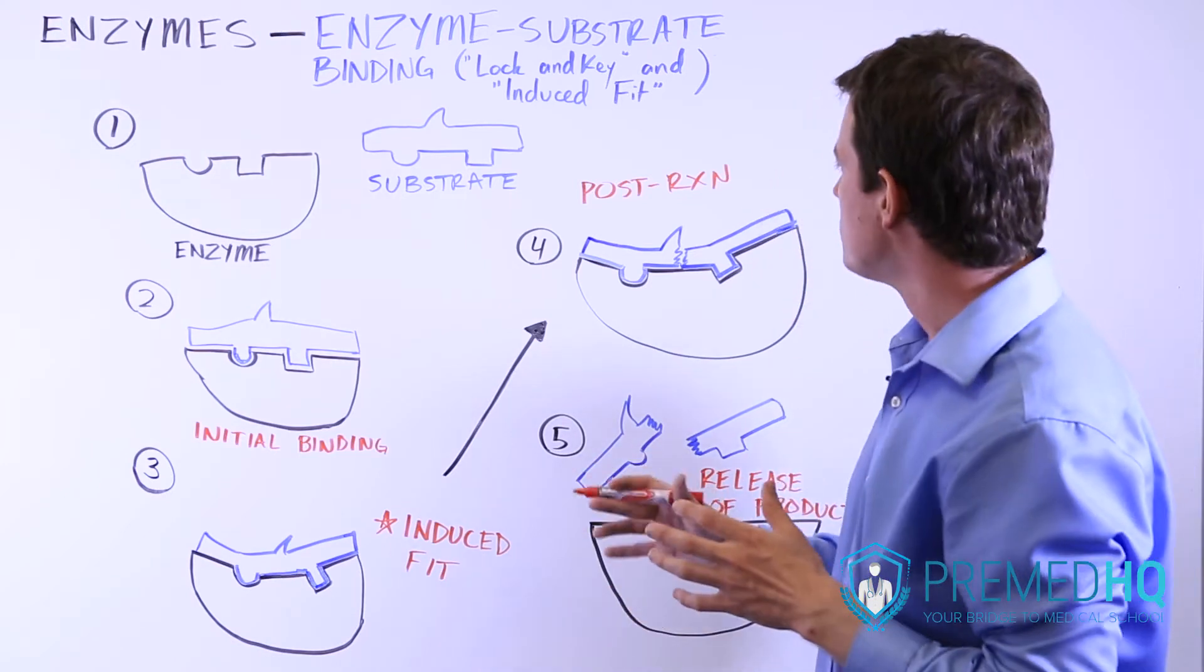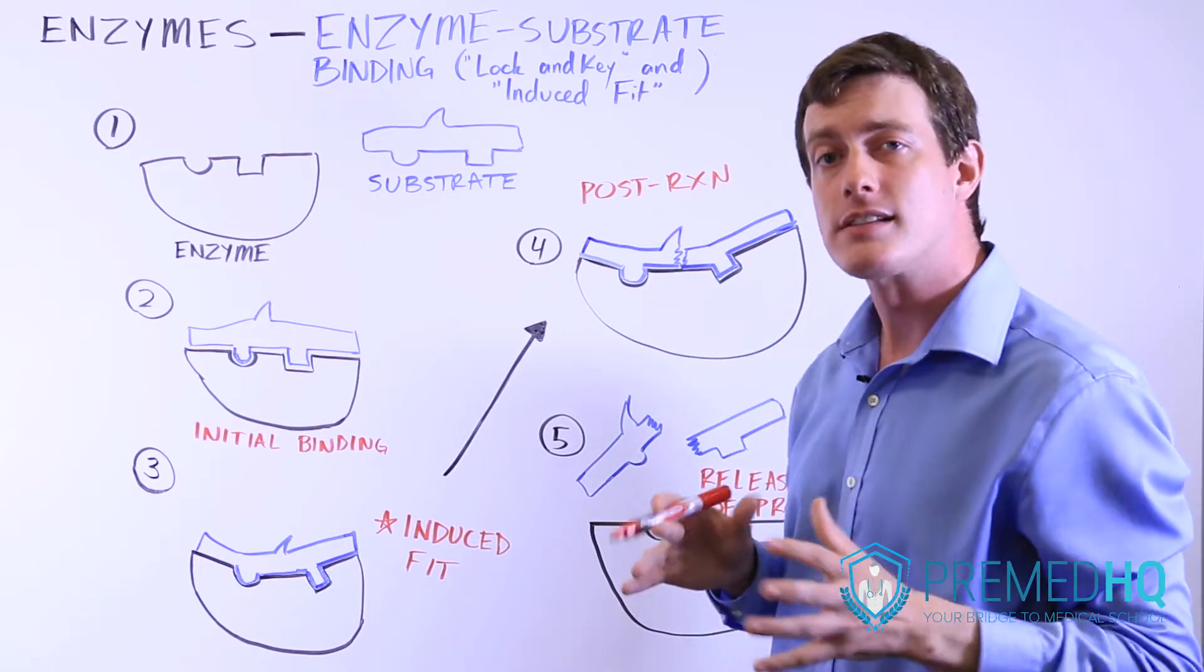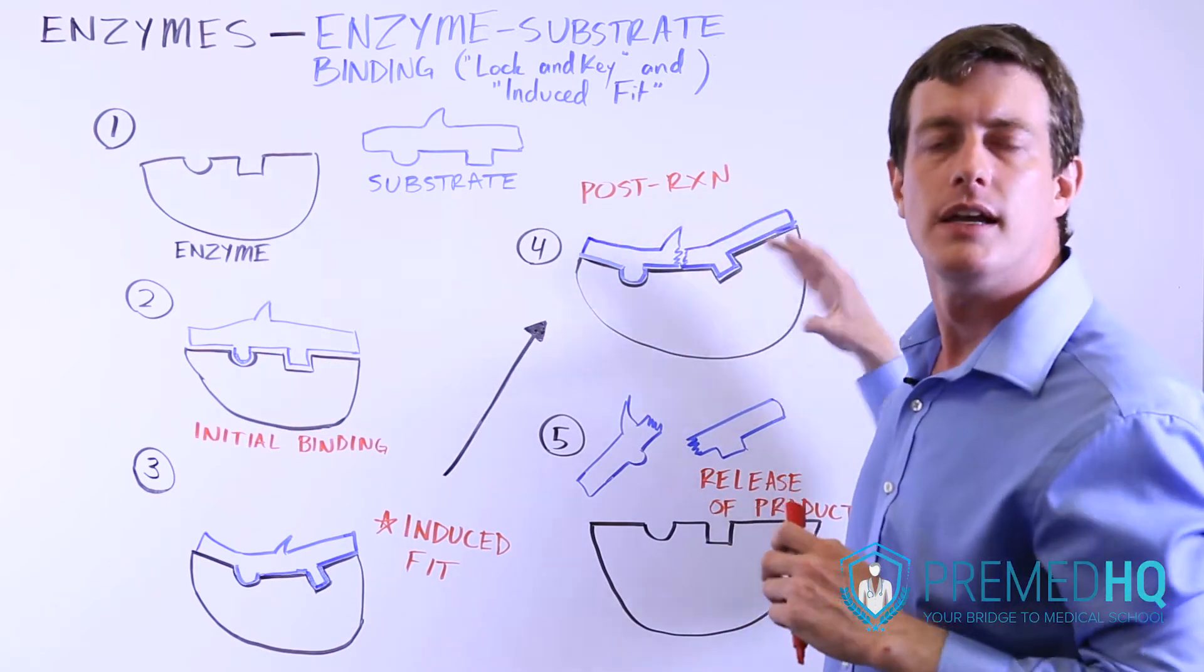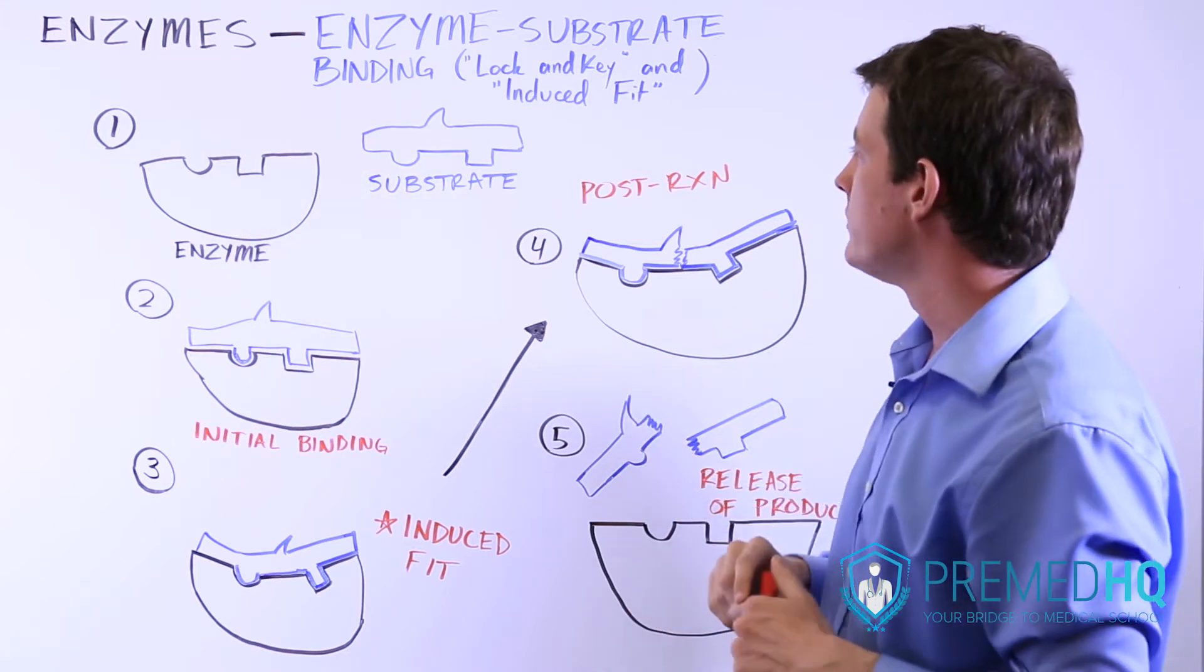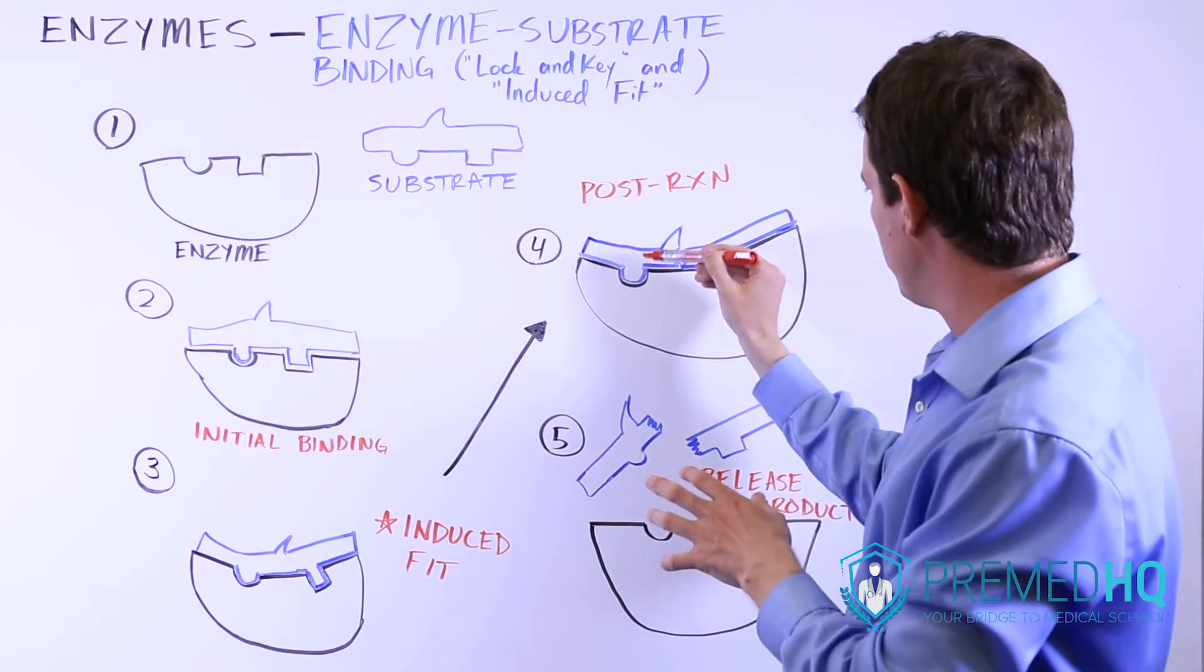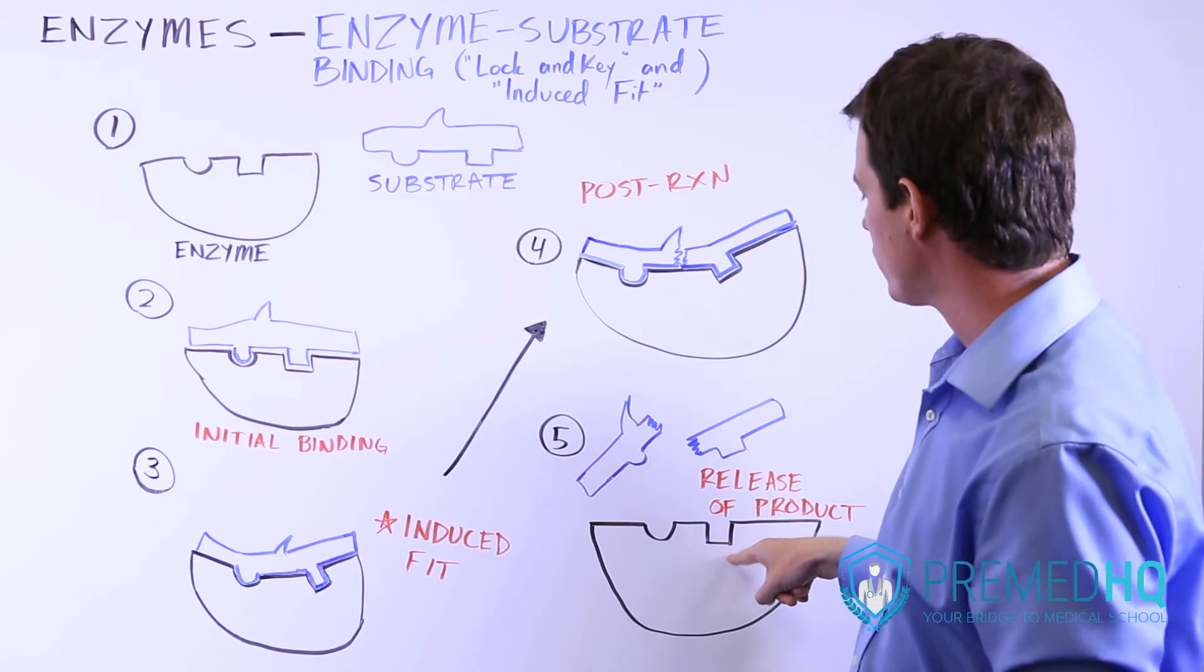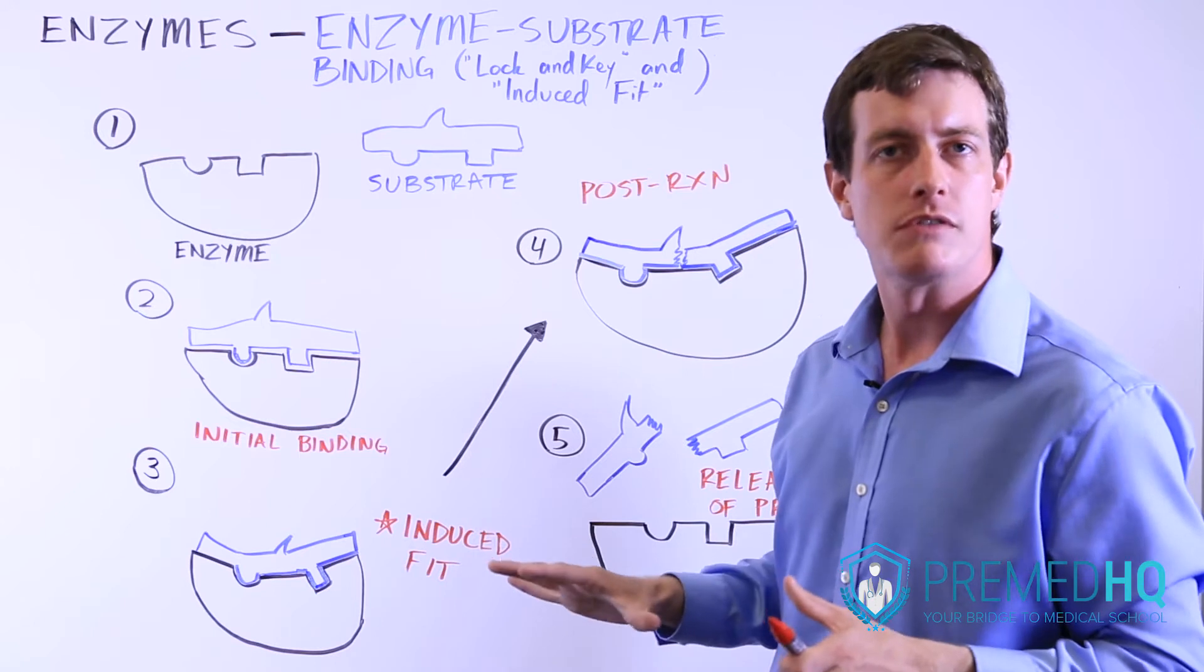After that occurs, then you have the reaction. The enzyme will in one way or another catalyze that reaction, and notice that here we've just cleaved this substrate into two pieces, but it still is resting in that enzyme. Then the last step is you see the product released. What this enzyme did is it took this one substrate molecule and it broke it into two different components. It broke a bond and now it will release the product. Notice that here the enzyme has returned back to its initial shape. It's no longer bent in this induced fit.